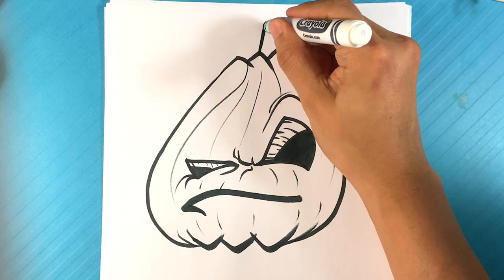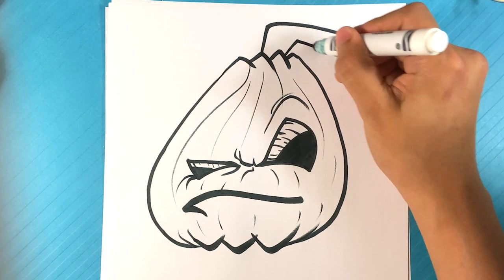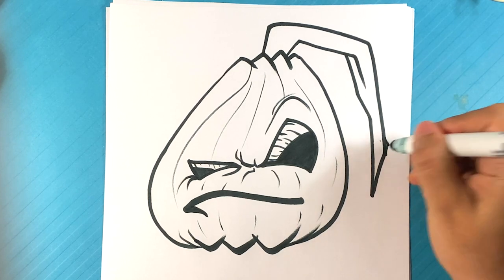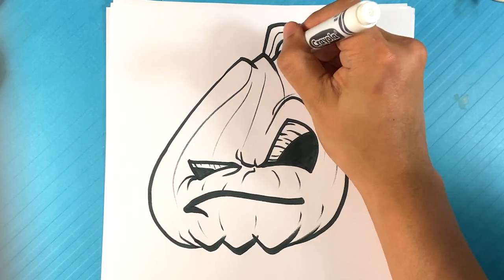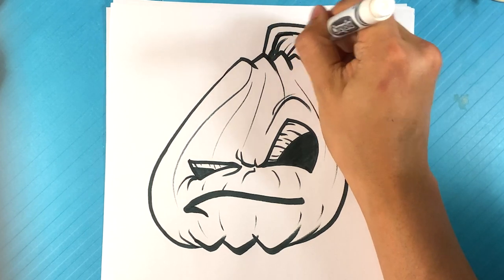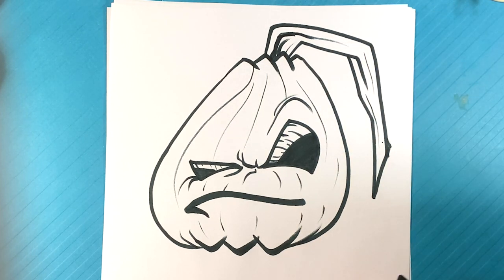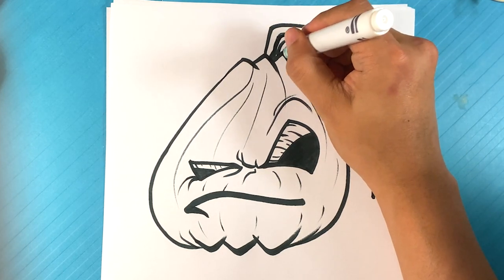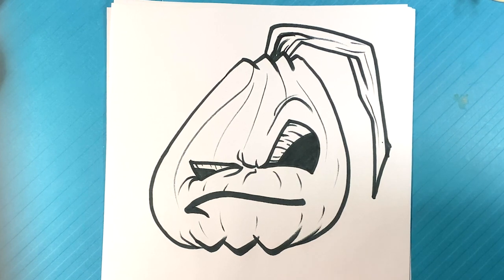And I'm going to draw the stem. And I want the stem to look all weird, like it's all just wrong. Like so. See, it's kind of like a gross, kind of misshapen stem.